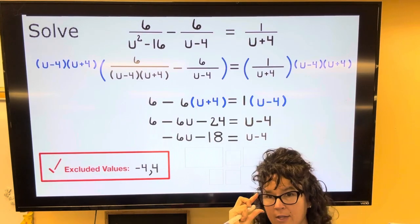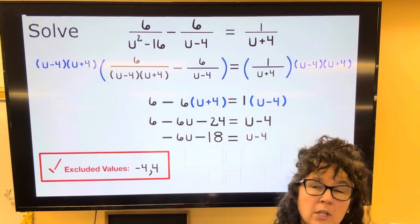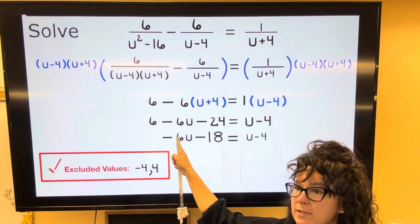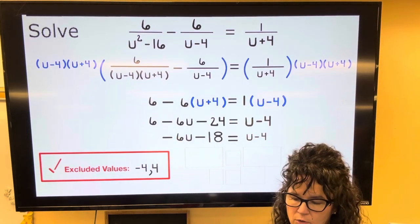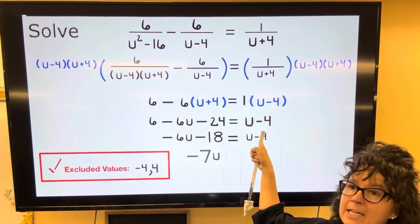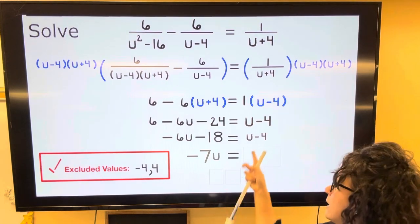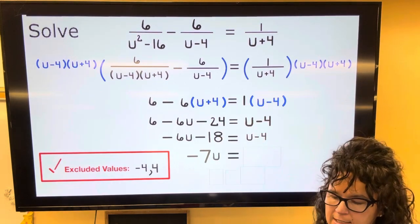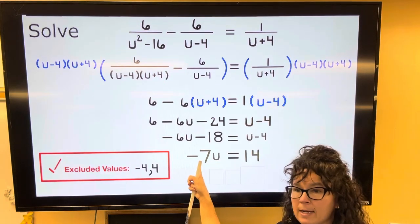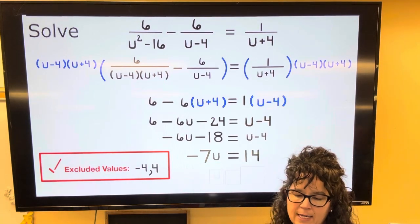Letters on one side, numbers on the other. I'm not showing a lot of work on this. I'm going to subtract U. Negative 6U minus a U is going to be negative 7U. Add 18. So on the right side, negative 4 plus 18 is 14. Get rid of multiply by negative 7 by dividing by negative 7. And 14 divided by negative 7 is negative 2.